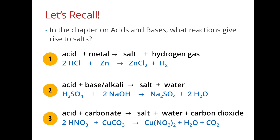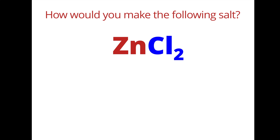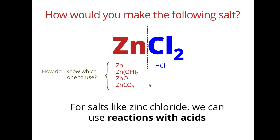In this chapter we think about different methods to prepare these salts. Given a particular salt, you must be able to identify what reagents and what method to use. For example, for zinc chloride we break it into two — the anion usually comes from the acid, while the cation can come from the metal, the metal hydroxide, the metal oxide, or the metal carbonate. Reacting any of these with HCl gives zinc chloride — this is what we call the reaction with acids method.